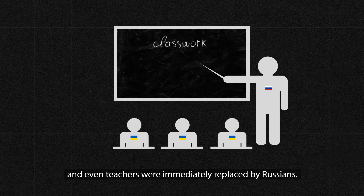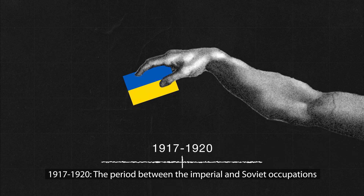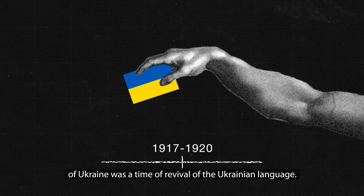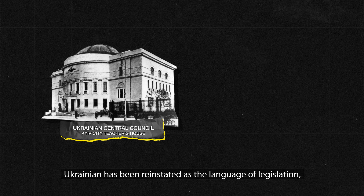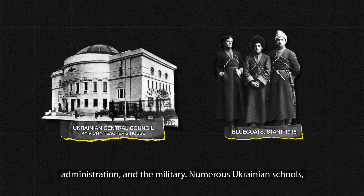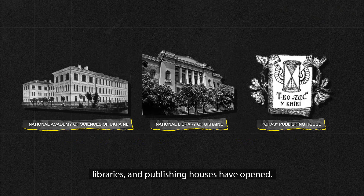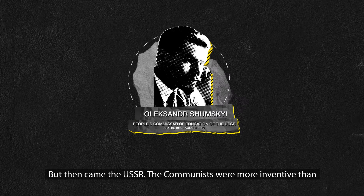From 1917 to 1920, the period between the imperial and Soviet occupations of Ukraine, was a time of revival of the Ukrainian language. Ukrainian was reinstated as the language of legislation, administration, and the military. Numerous Ukrainian schools, libraries, and publishing houses opened. But then came the USSR.